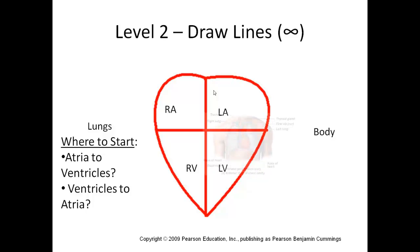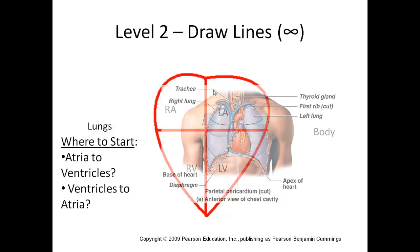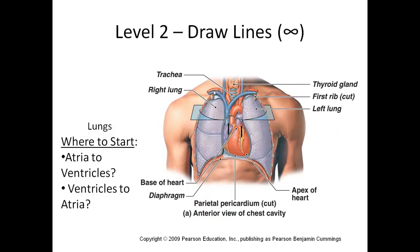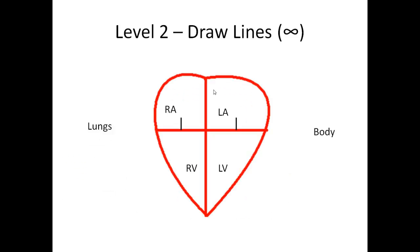Think about it using a body picture — blood flows from top to bottom, meaning from atria to ventricles. Think of gravity: it generally causes blood to flow from the top down to the bottom. So we draw arrows on each side — from the right atrium to the right ventricle, and from the left atrium to the left ventricle.